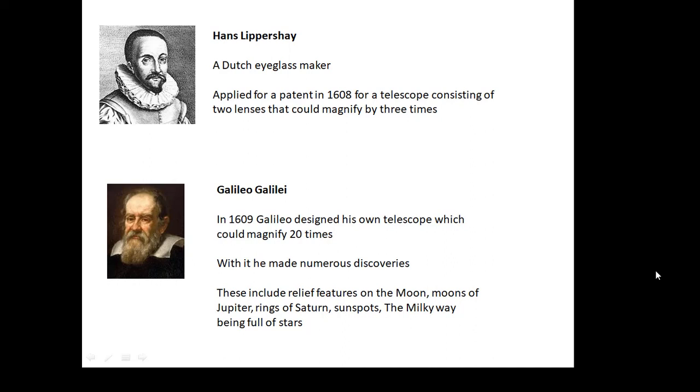The first person to make a significant contribution to astronomy was Galileo. In 1609, Galileo made his own telescope, which had a magnification of 20 times. And with it, he made lots and lots of discoveries. He saw mountains and craters on the moon in a lot of detail, the moons of Jupiter, rings of Saturn, sunspots, lots and lots of other stuff with his telescope.